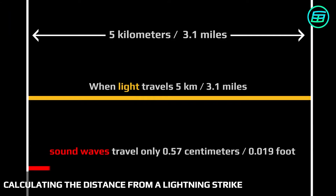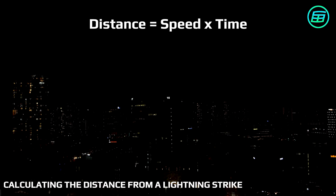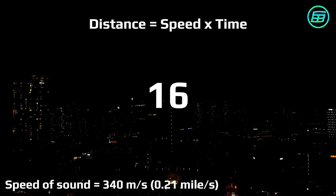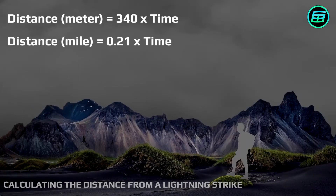So the lightning flash indicates when the sound waves begin to travel from the source. All we need to do is count the seconds as soon as we see the flash until we hear the thunder clap. We know what the speed of sound is, so we just need the time to calculate the distance. When we finish counting the seconds, we multiply the number of seconds by the speed of sound to find the approximate distance.